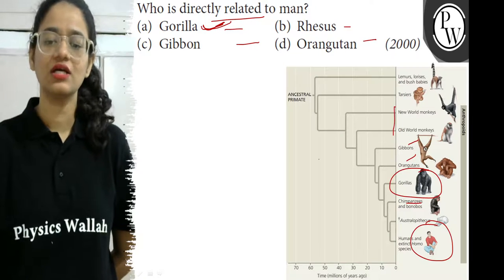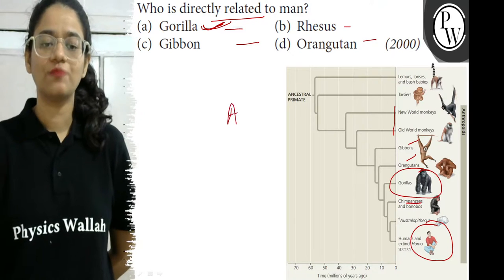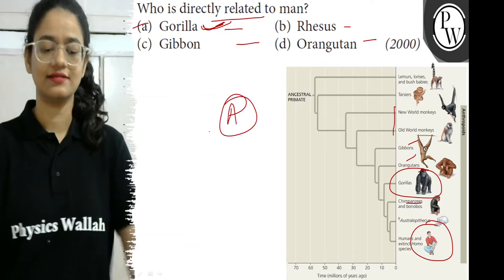So gorilla is the most closely related option. If chimpanzee were in the options, chimpanzee would be the answer. But option A, gorilla, is the right answer. All the best.